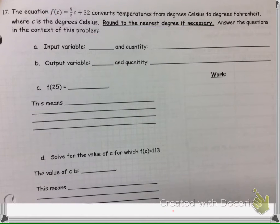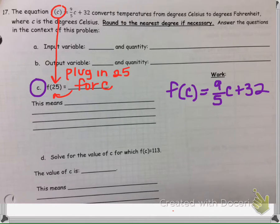Now let's go ahead and move to part C, which says find F of 25. So what F of 25 is saying, it's saying instead of C, because C is in the parentheses, now there's a 25 in the parentheses. So it's saying take the C out and find its value when the C is 25.